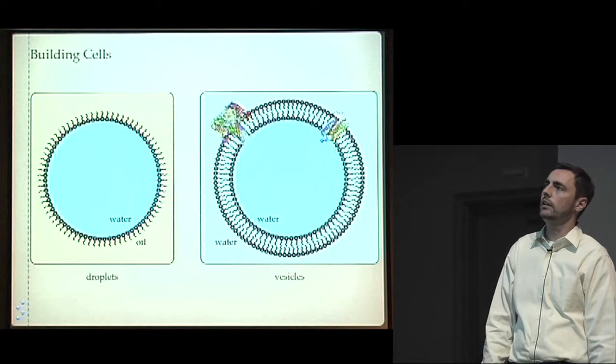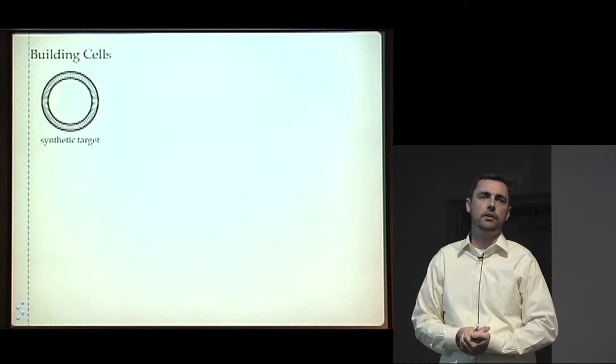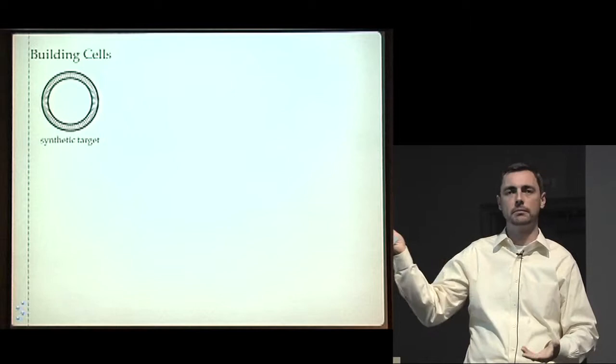But the problem is, and this is one of the main problems that Jack was talking about in his talk, is that making these vesicles is more of an art than a science. And what we would like to tackle is, we would like to tackle this problem and treat this like an actual synthetic target, like my colleagues in Building A.